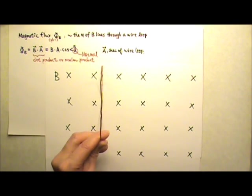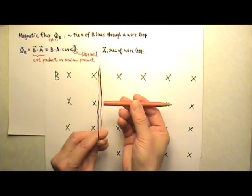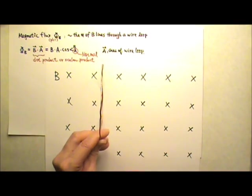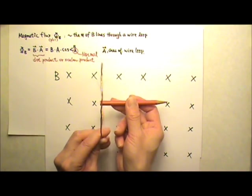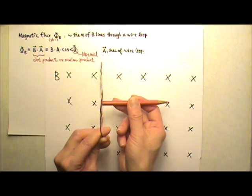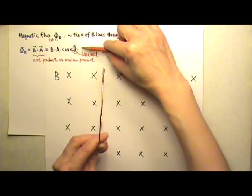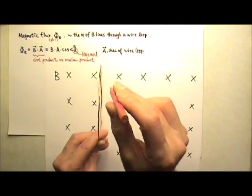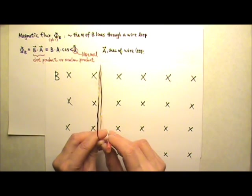If the wire loop is like this, the normal vector can either go this way or that way. In either case, the angle between B and A would be 90 degrees, and cosine 90 degrees is 0, no flux, which is consistent with our observation that no field lines are going through the loop.